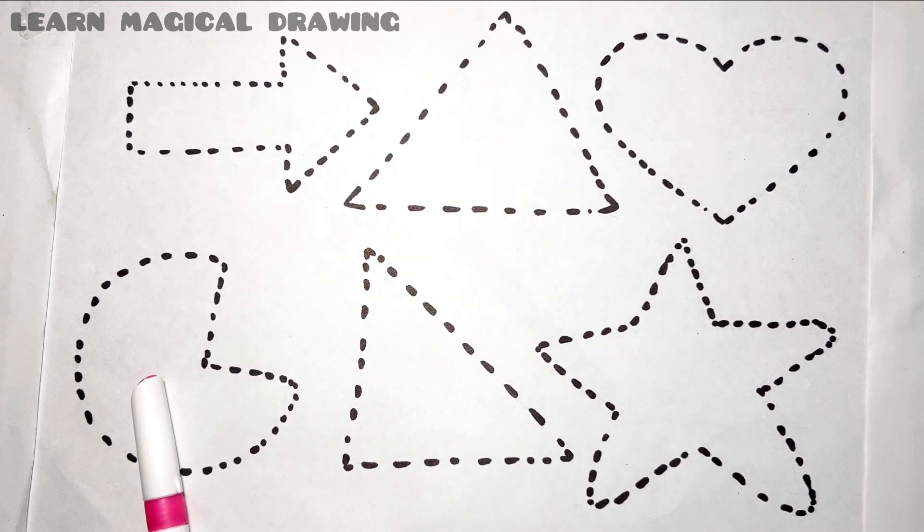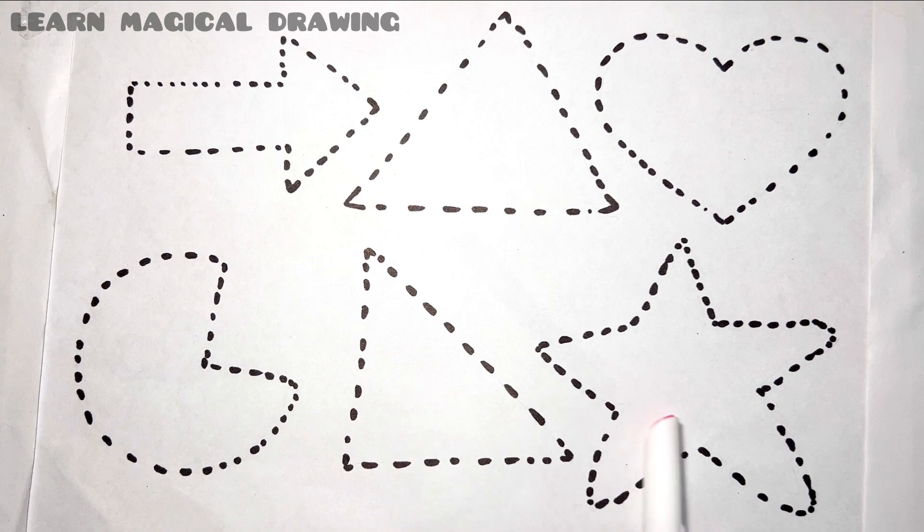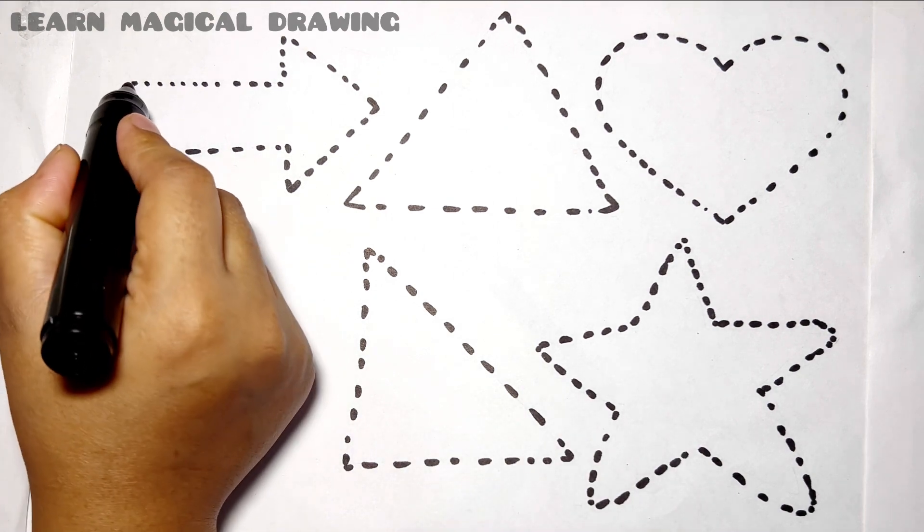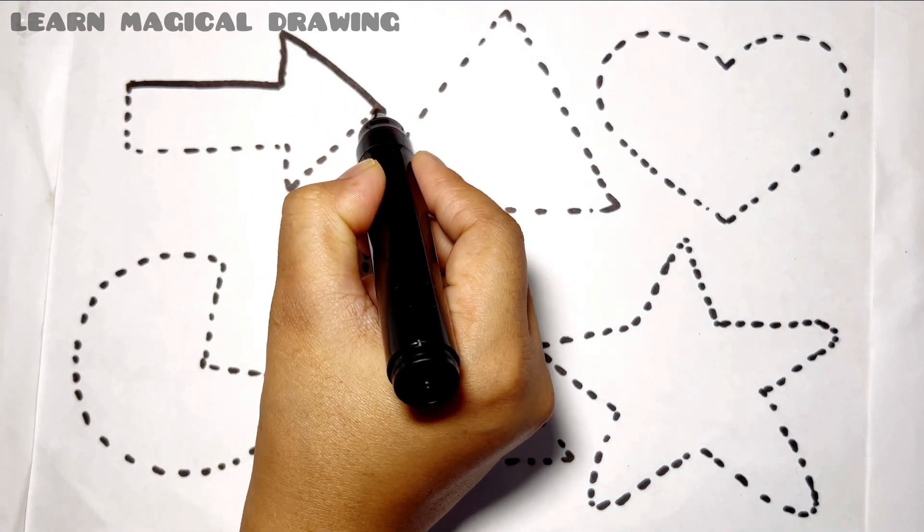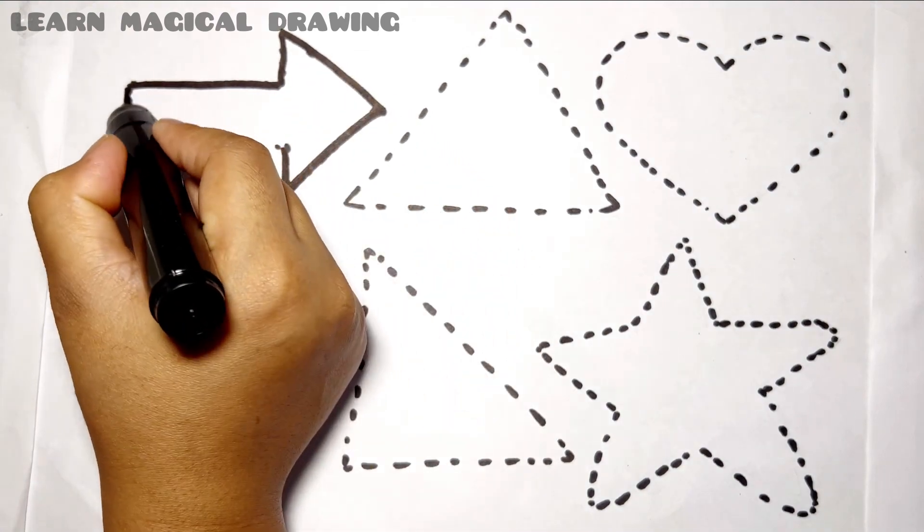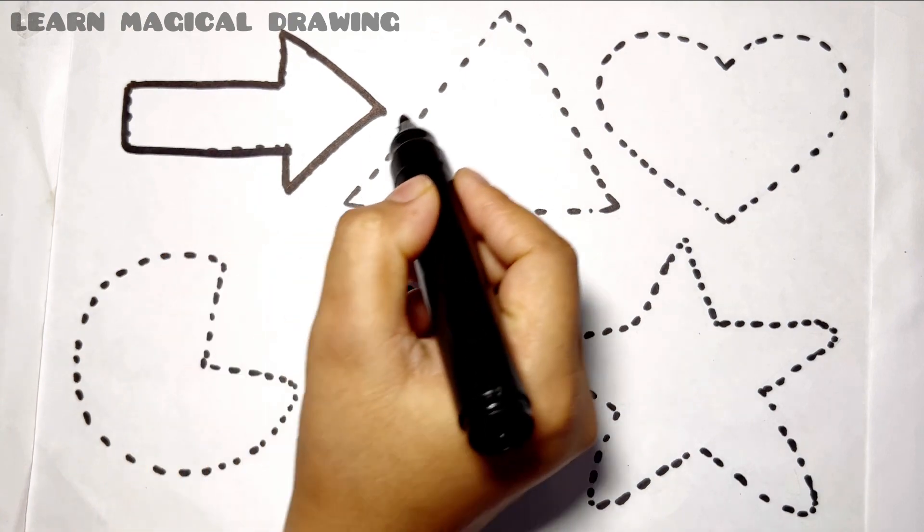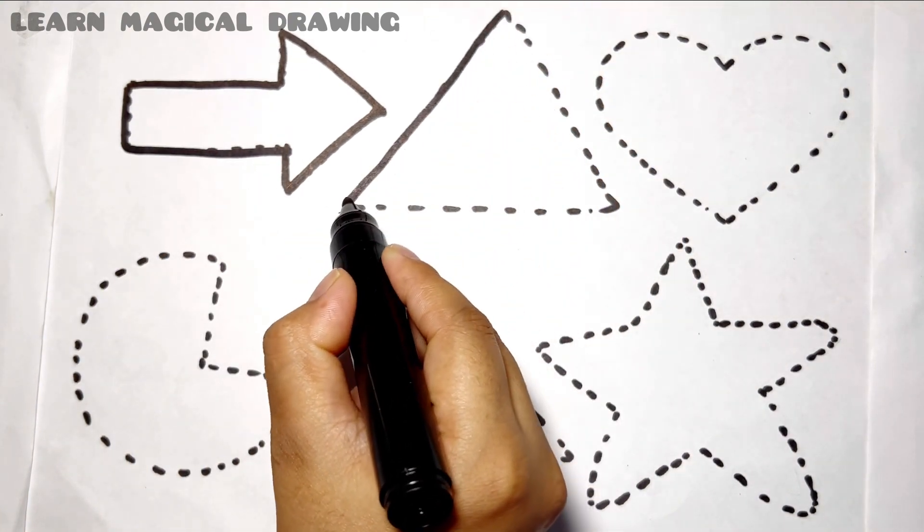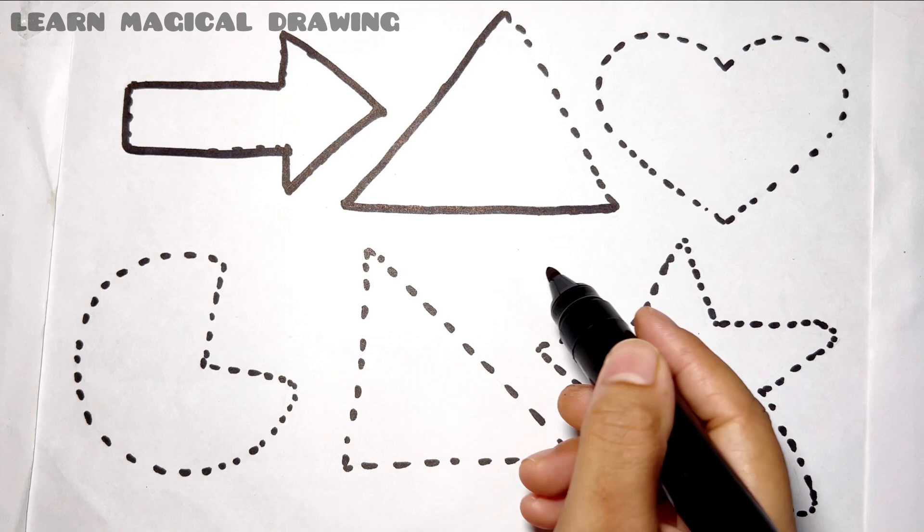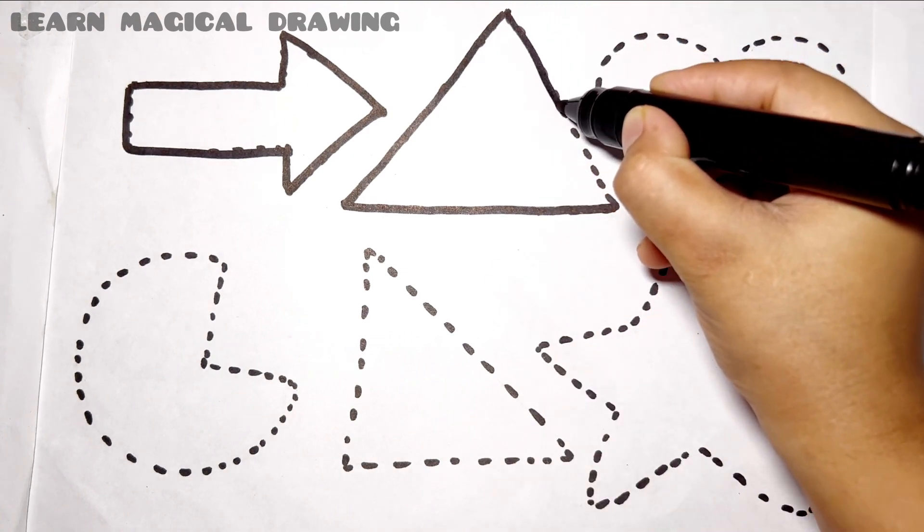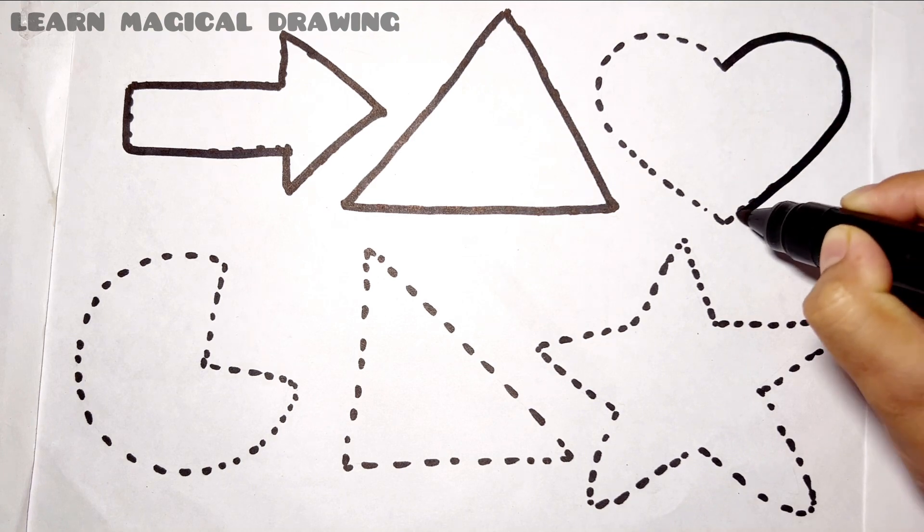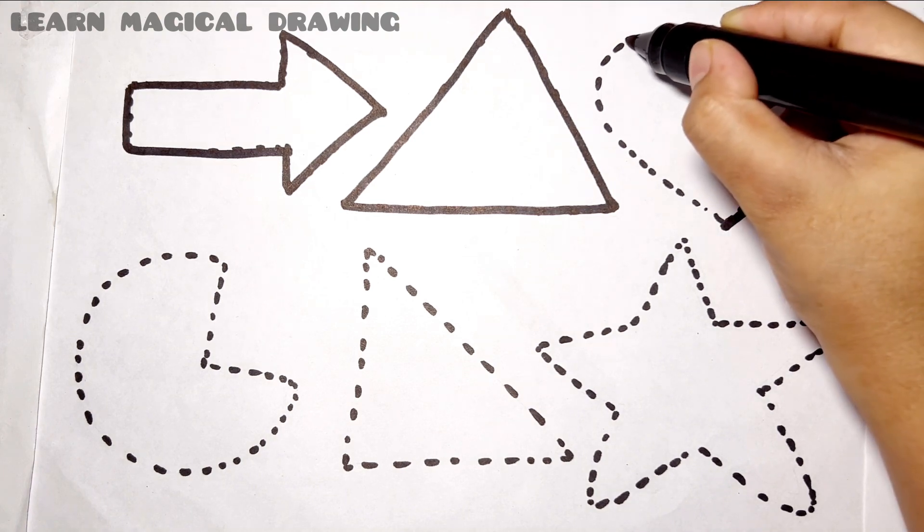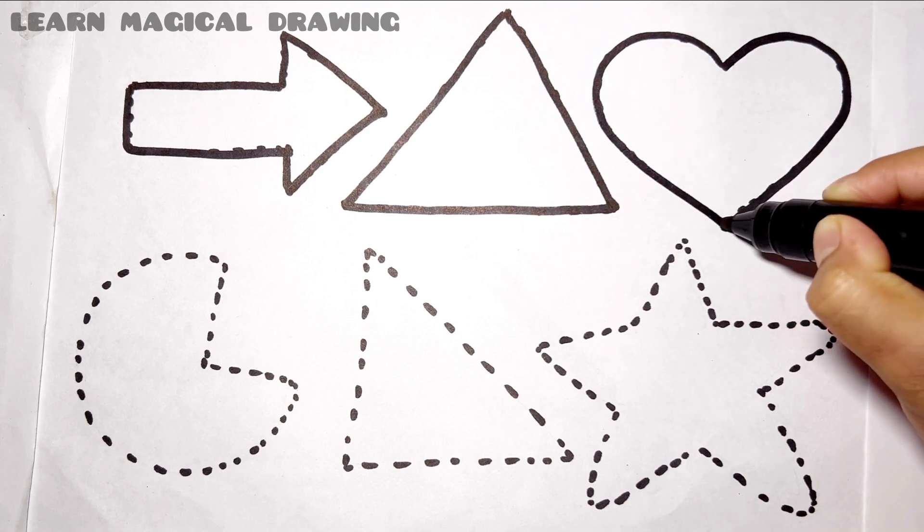Triangle, heart, eye, triangle, star. Let's learn some shape. Let's draw. Arrow. Arrow shape, triangle, triangle shape, heart, heart shape.